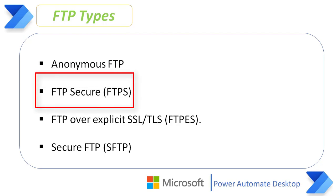The second type is FTP Secure, which we call FTPS — sometimes referred to as FTP Secure Socket Layer. This approach enables implicit Transport Layer Security (TLS) as soon as the FTP connection is established. FTPS was initially used to help enable a more secure form of FTP data transfer. It typically uses port 990.